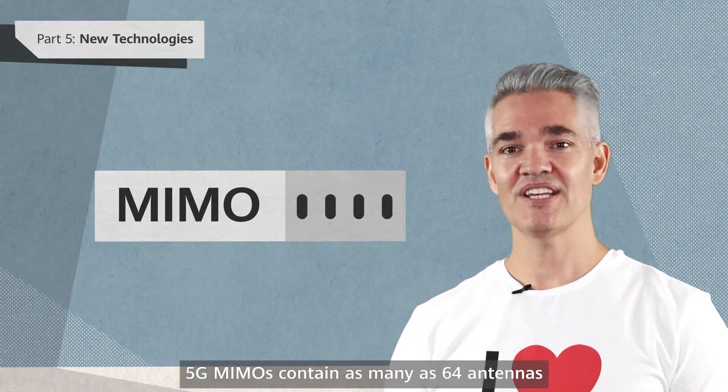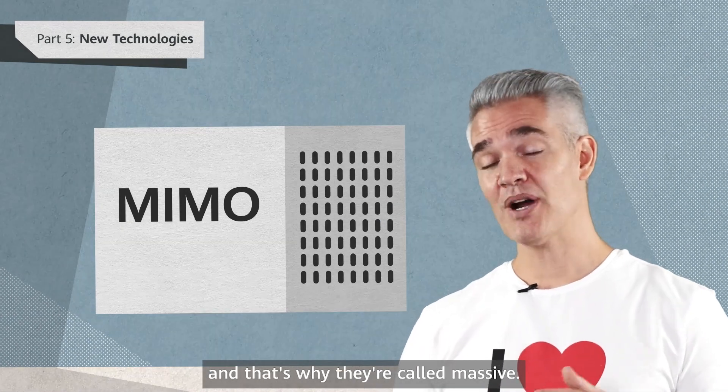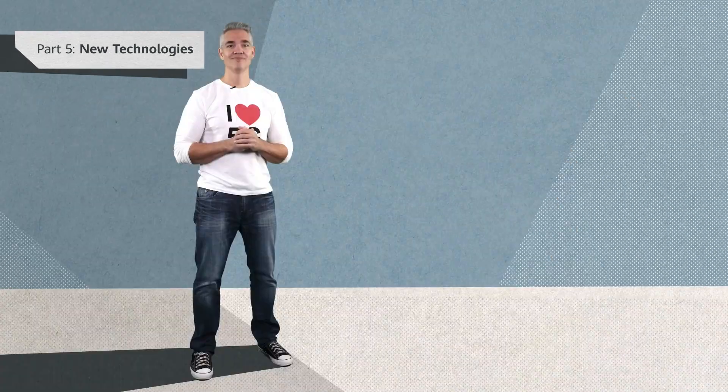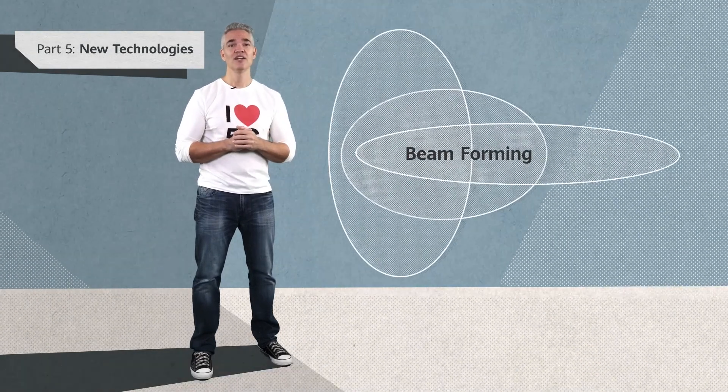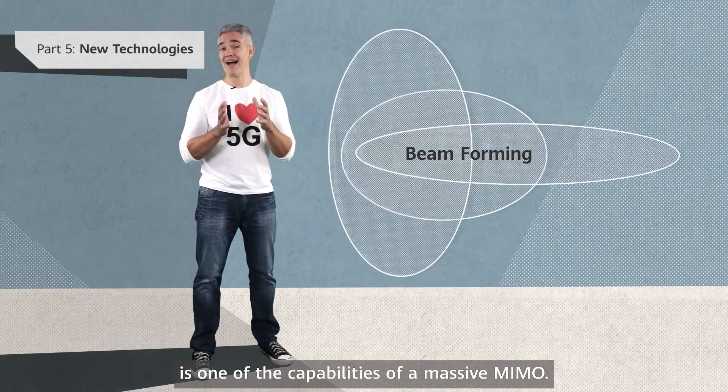5G MIMOs contain as many as 64 antennas, and that's why they're called massive. Beamforming, a technology for higher frequency transmissions, is one of the capabilities of a massive MIMO.